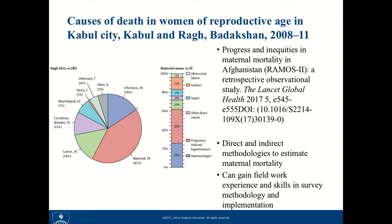My work, as I said before, has primarily been on maternal health and family planning. This graphic shows a project where we were estimating maternal mortality in Afghanistan. It shows the distribution of cause of death for women of reproductive age, 15 to 49, in one region in Afghanistan. The red in the pie chart is maternal mortality, and the bar chart to the side shows the causes of maternal mortality. This was a project where I used direct and indirect methods of estimating maternal deaths and gained fieldwork experience and skills in survey methodology.